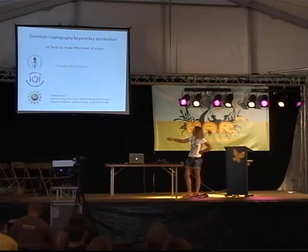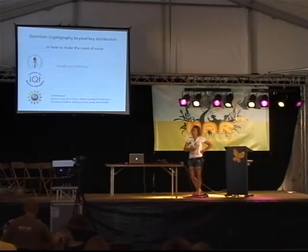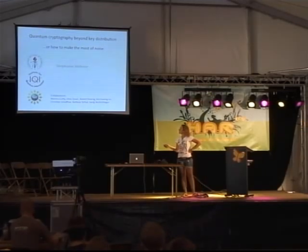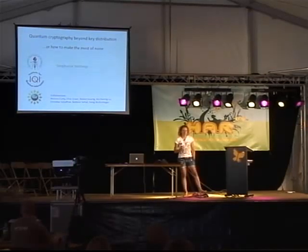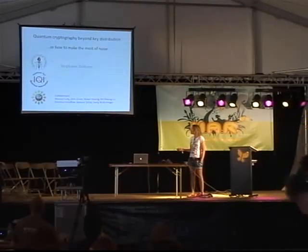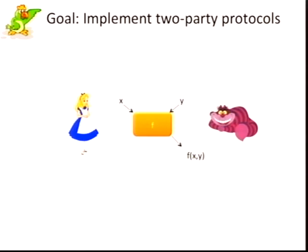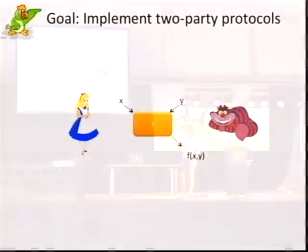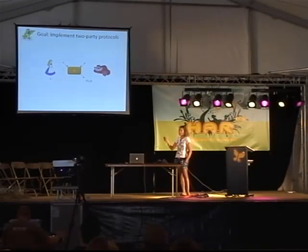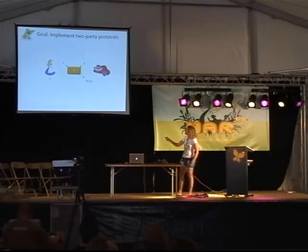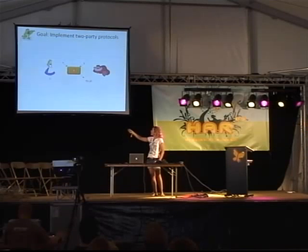I have worked with a lot of different people on this subject. Christian is here, so you can talk to him later. Before I talk about any quantum things, let me explain what the problem is that we are trying to solve. We want to implement two-party protocols between two parties, Alice and Bob. Alice and Bob have agreed on some function, which is known to both of them. Alice has some input X, which is unknown to Bob, and Bob has some input Y, which is unknown to Alice. At the end of the day, they want to compute the function F of X and Y.